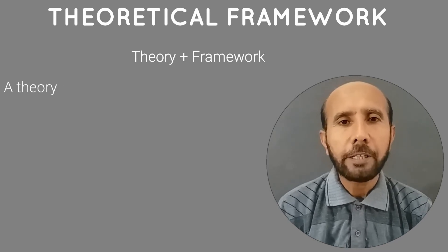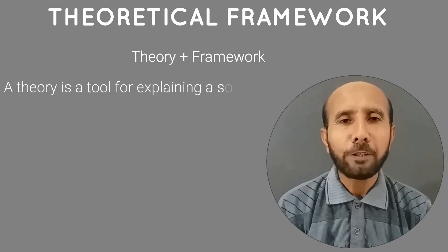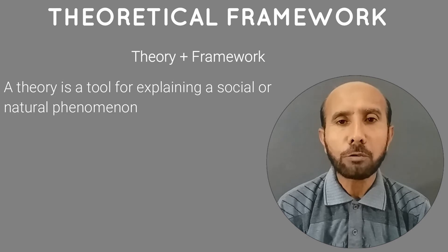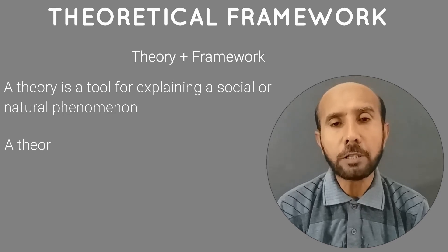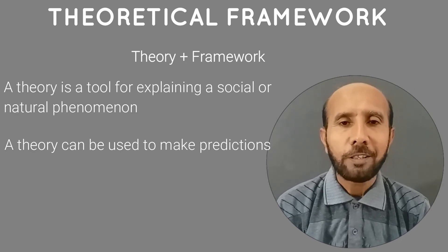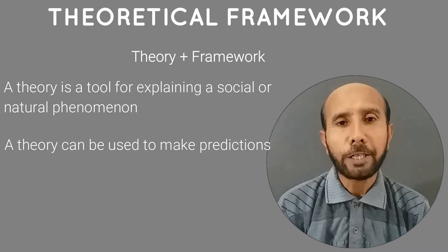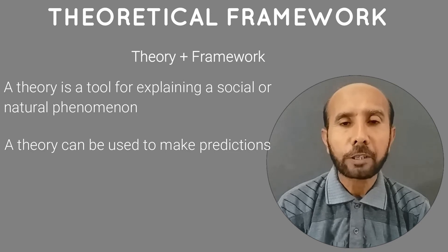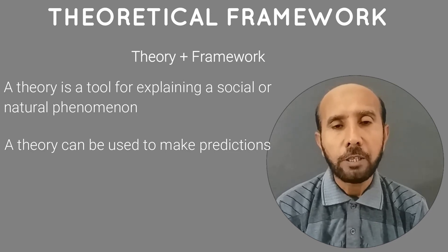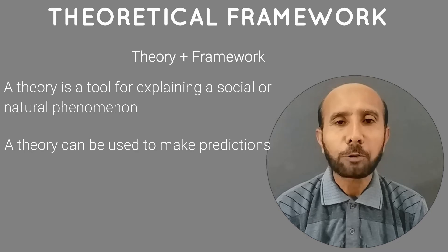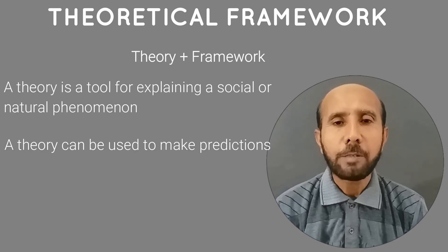So what is a theory? A theory is a tool to explain social or a natural phenomenon. It describes the associations between different variables in a given context and can be used to make predictions. For example, Abraham Maslow's theory of motivation or Herzberg's two-factor theory can explain and predict motivation of individuals or employees. Similarly, theories of liberalism or communism can be used to explain and predict the policies of a liberal or a communist state in a given context respectively.